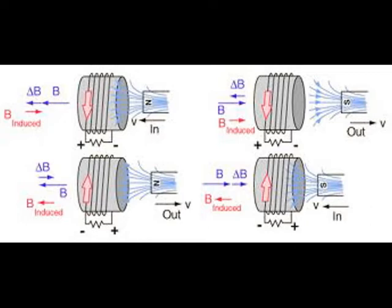If the north pole of a magnet moves away from a solenoid, it will establish a south pole to attract the magnet and resist the change in the density of that external magnetic field.